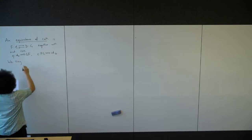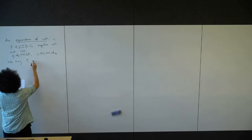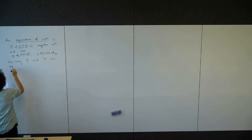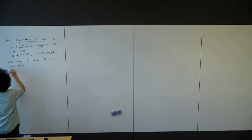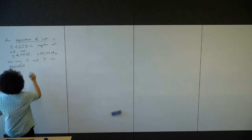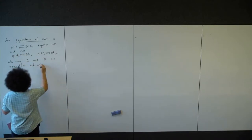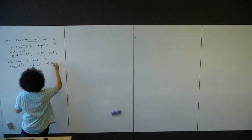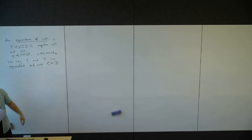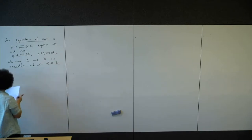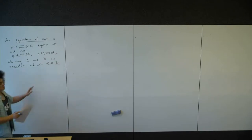We say that C and D are equivalent if such a collection of information exists. And we write it like this — it's like the isomorphism symbol, but with one less line. So that's the definition of equivalence of categories.